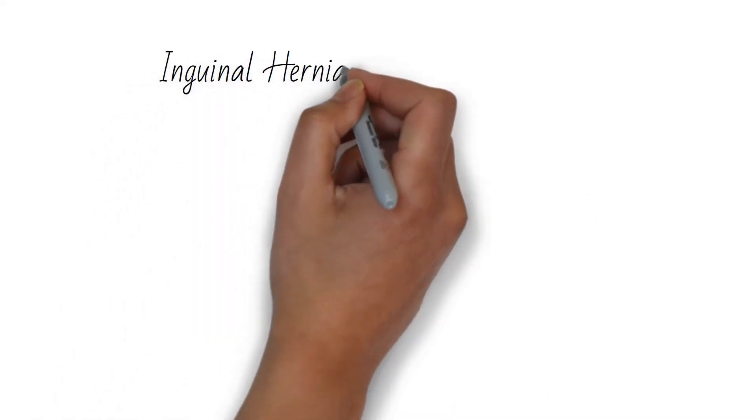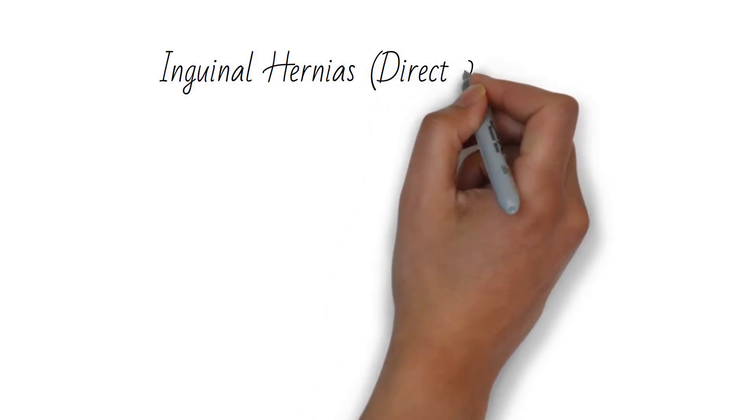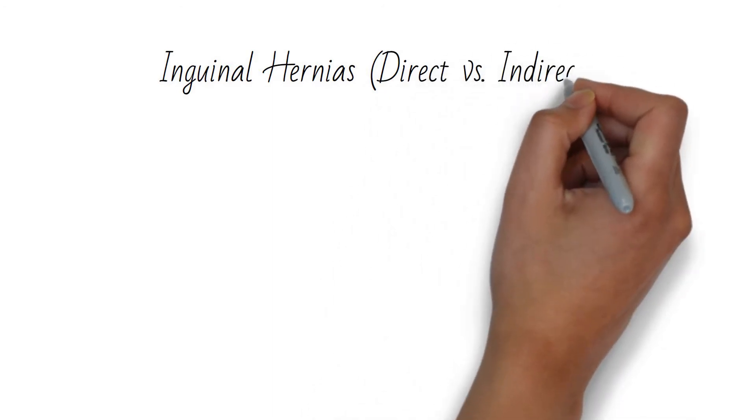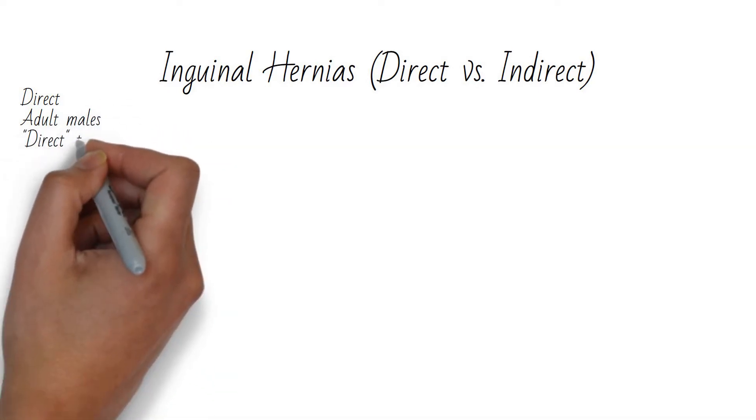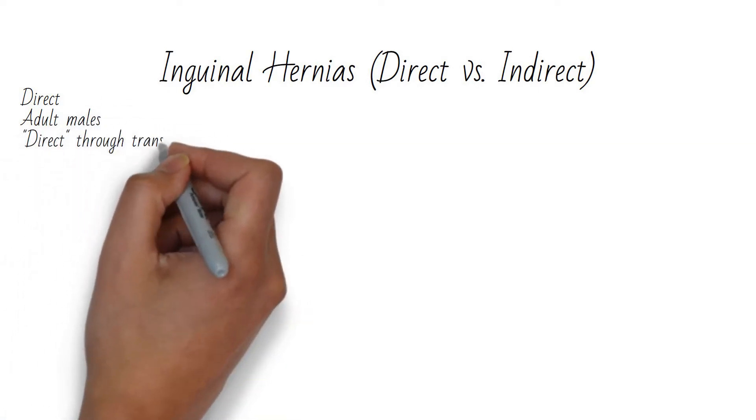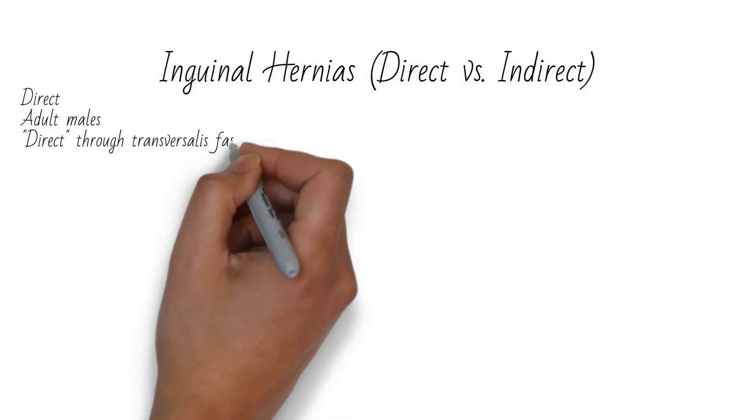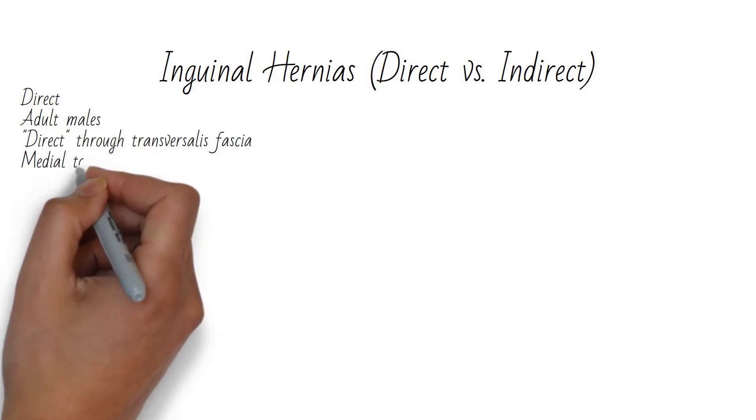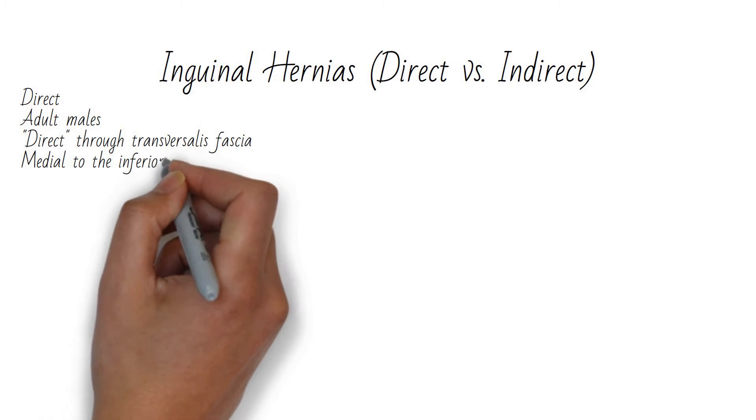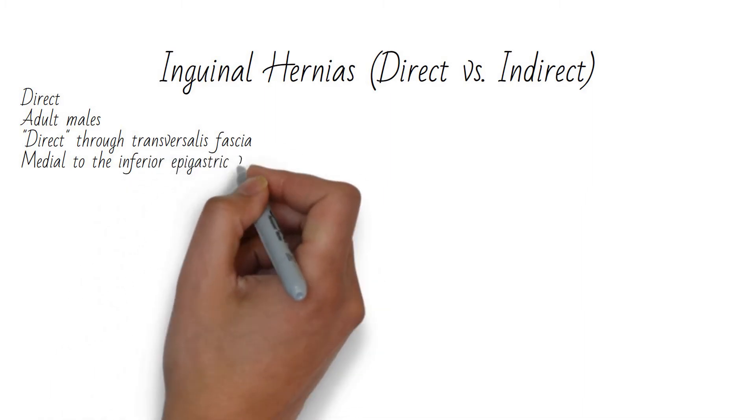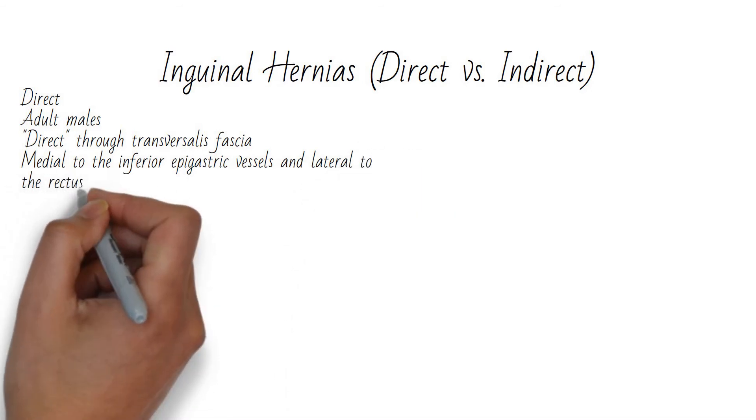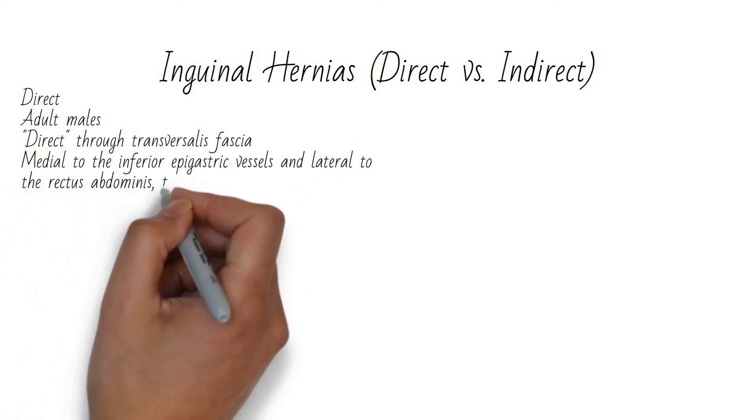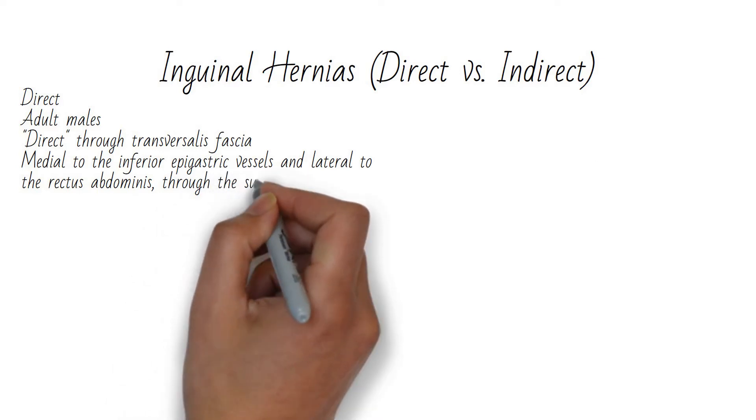We'll start with inguinal hernias. Inguinal hernias can be split into direct versus indirect hernias. Direct hernias are most common in adult males. They involve bowel going directly through a weak spot in the abdominal wall in the transversalis fascia. These will be medial to the inferior epigastric vessels, lateral to the rectus abdominis, and through the superficial but not the internal inguinal ring.